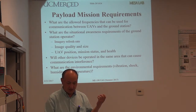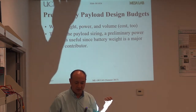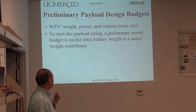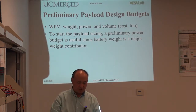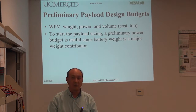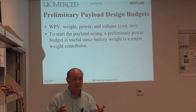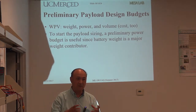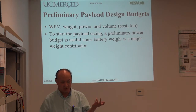Continuing with mission requirements: How many UAVs will be in flight? What are the target characteristics — number of targets, target separation, shape, size, color? What are the allowed communication frequencies between the UAV and ground control station? What are the imagery refresh rate, image quality, size, position, mission status, and health requirements? After answering these, we do the preliminary payload design budget: weight, power, volume (WPV), and cost. The battery weight is a major contributor, so don't use an oversized battery.